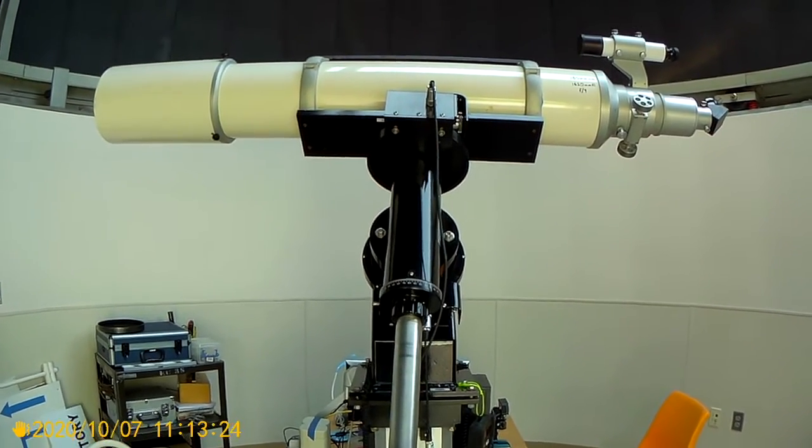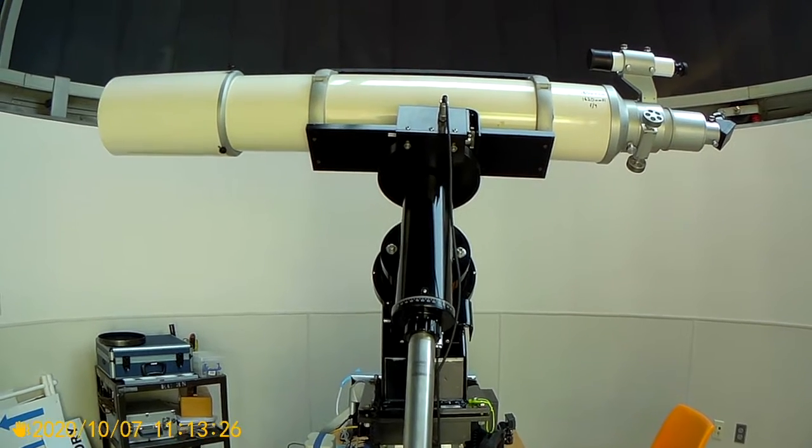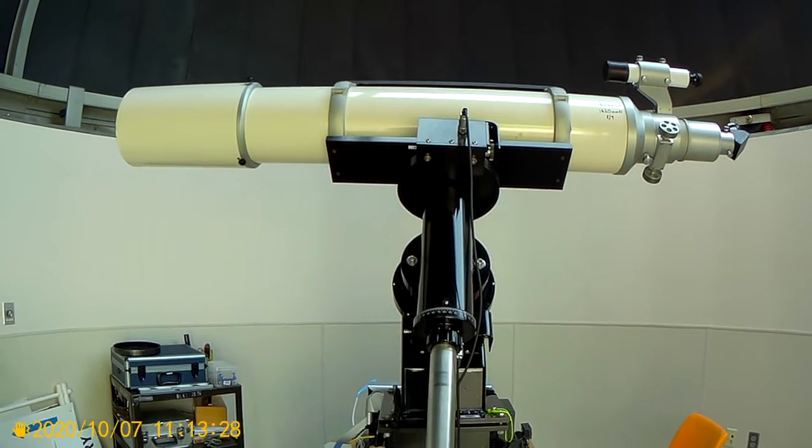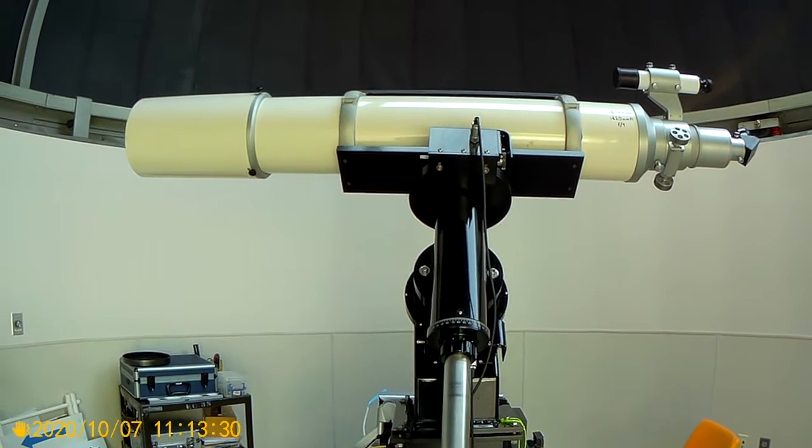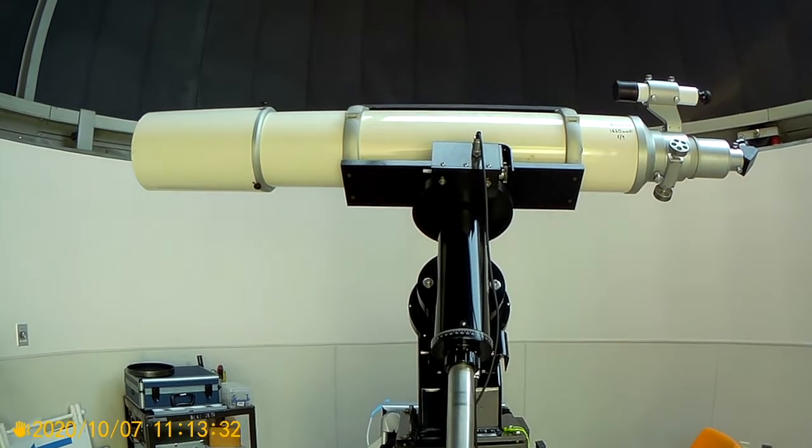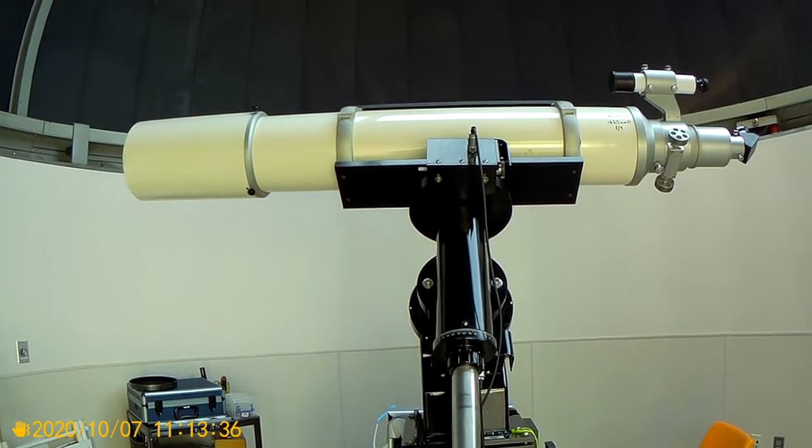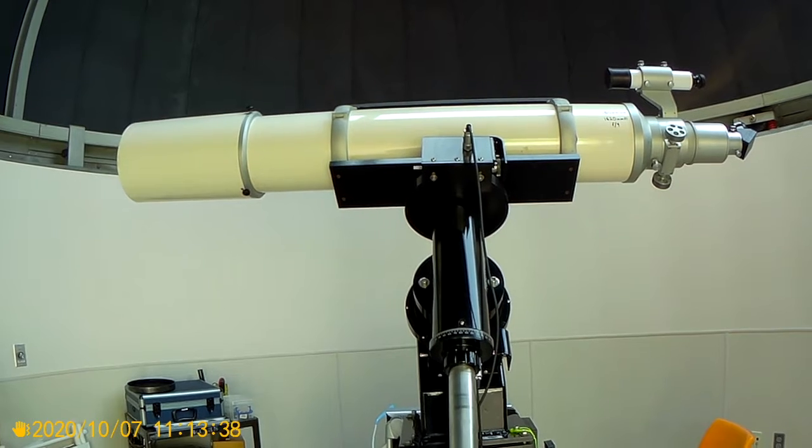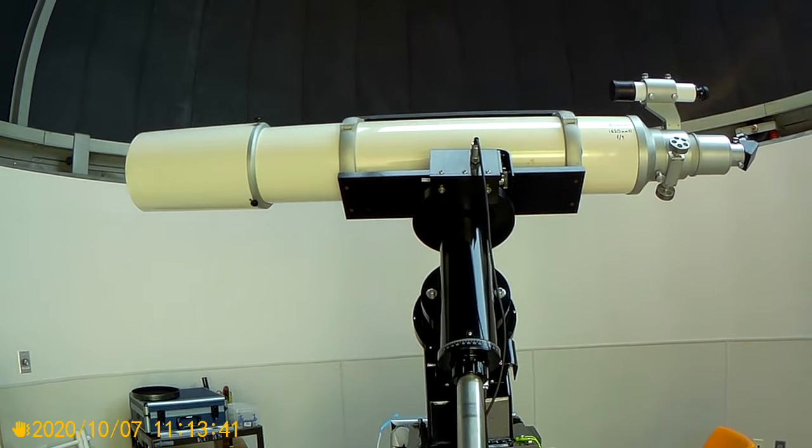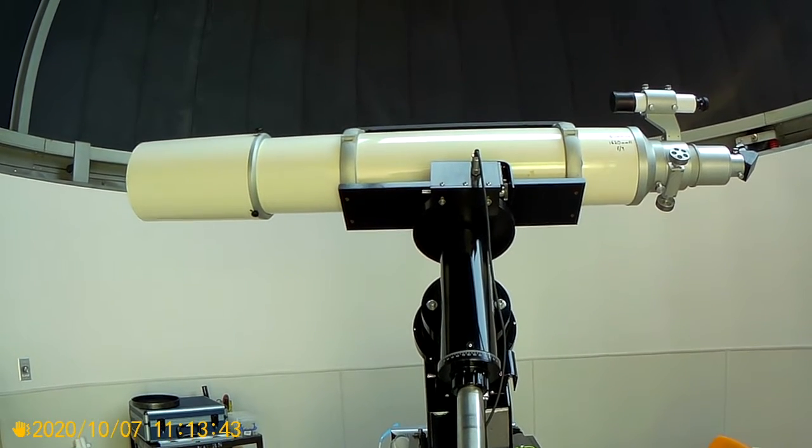Alright, we're in the observatory, and what you're looking at is a TMB 180mm refractor with a focal length of 1,620mm, and it has a f9 ratio.